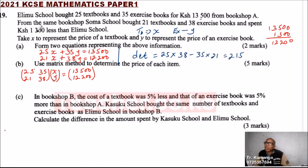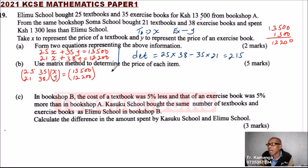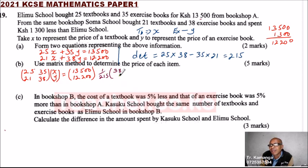To solve this, you multiply both sides by the inverse of the matrix. The inverse of a matrix is 1 over the determinant — that is 1 over 215 — times the adjugate: interchange the main diagonal elements, so 25 becomes 38 and 38 becomes 25, and introduce a minus sign to the other diagonal: minus 35 and minus 21.